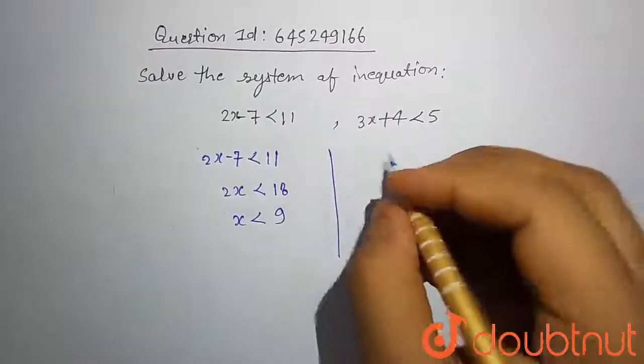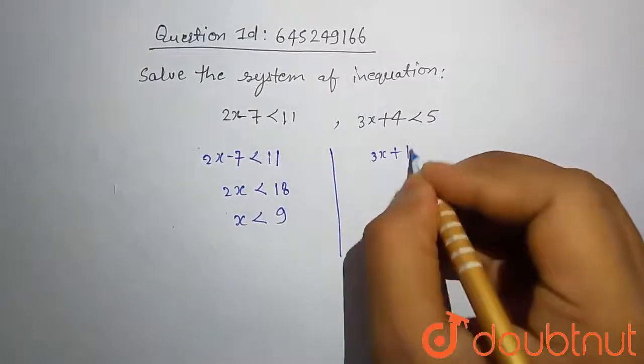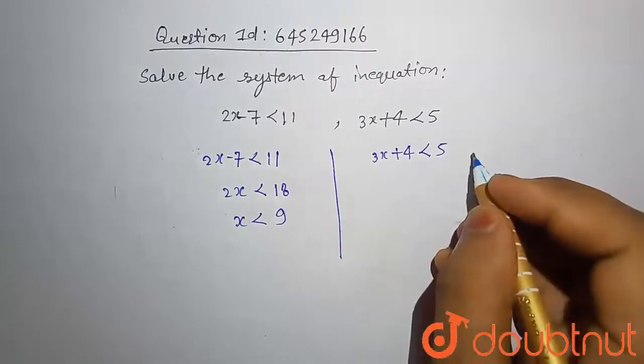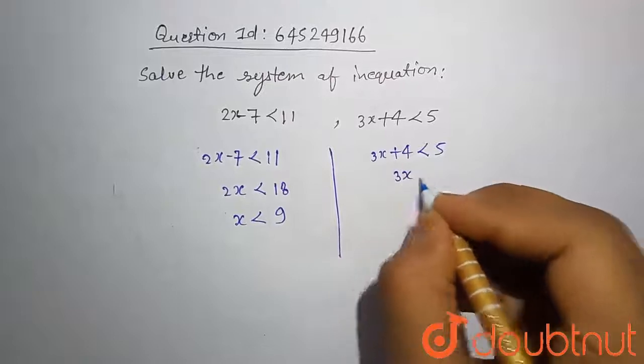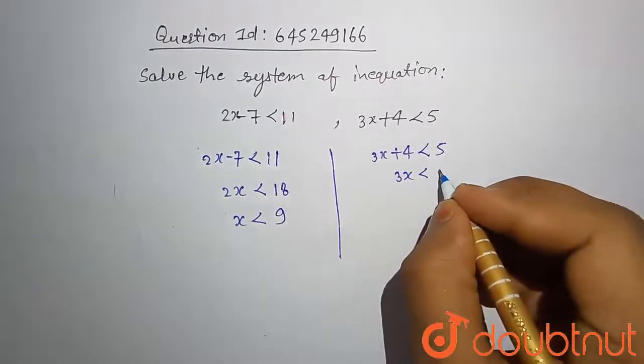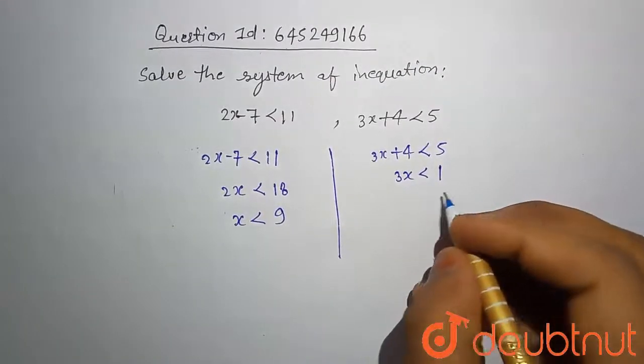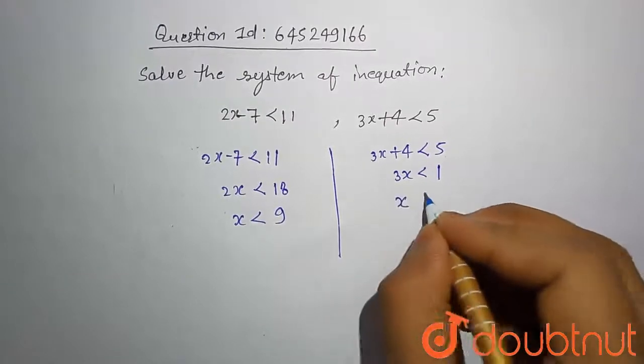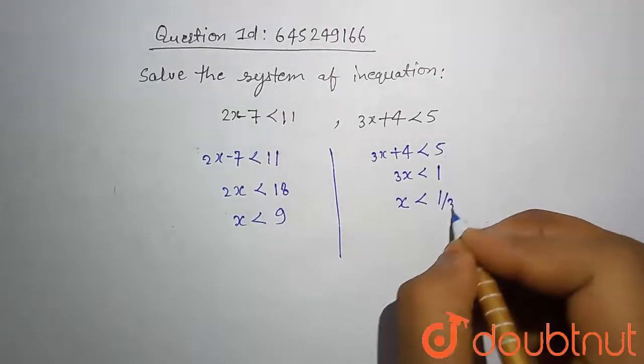And second is 3x plus 4 less than 5. If you take 4 to the right side, then this comes out 3x less than 1. If you divide by 3 on both sides, then this comes out x less than 1 by 3.